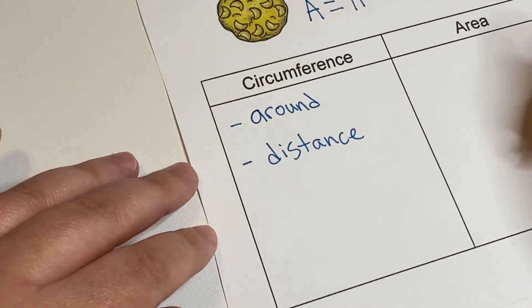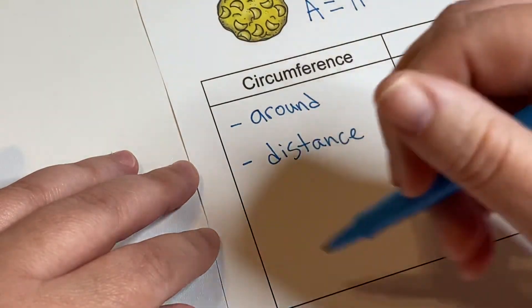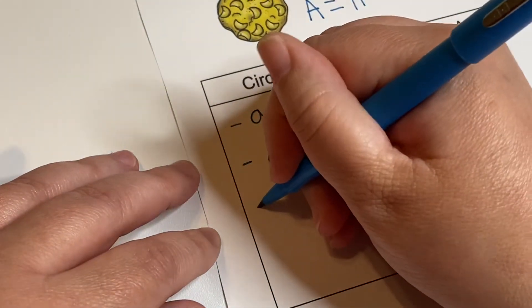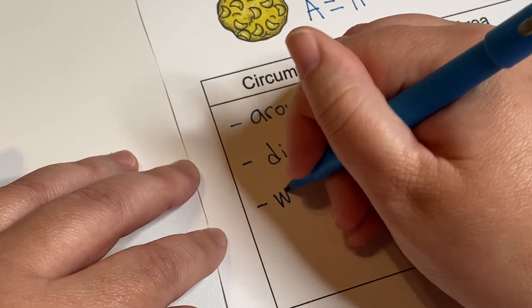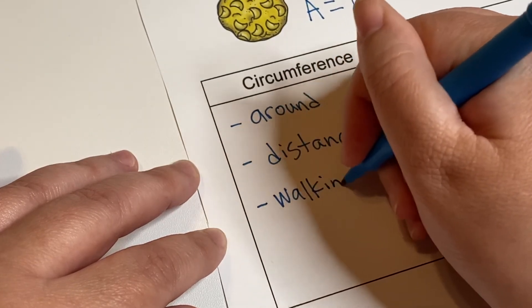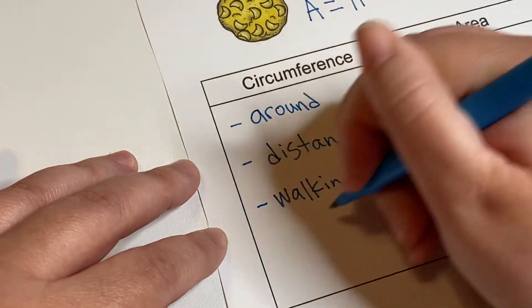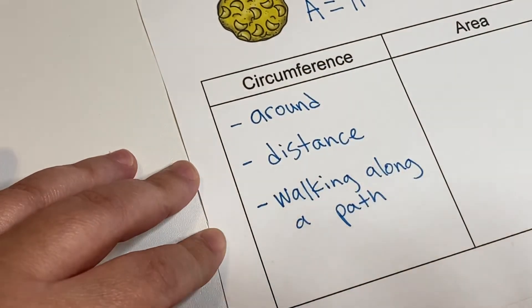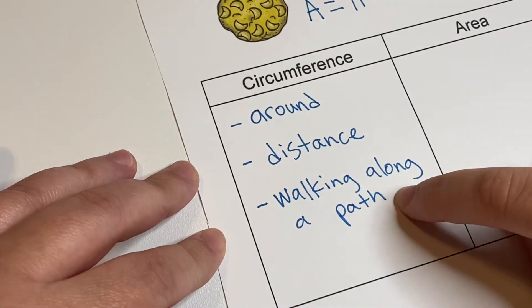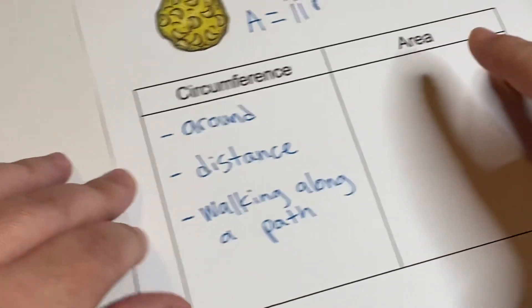Okay, so those are the things that we're looking for. Some examples would be like walking along a path. Say you had a circle path - that would be circumference.